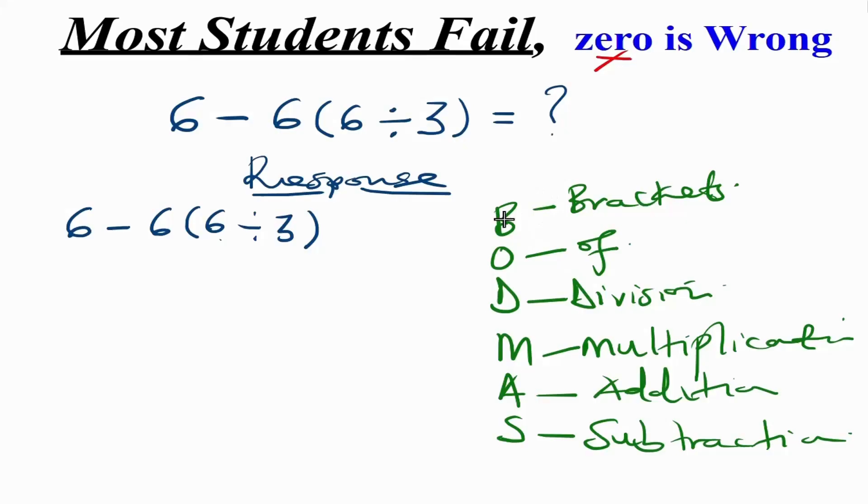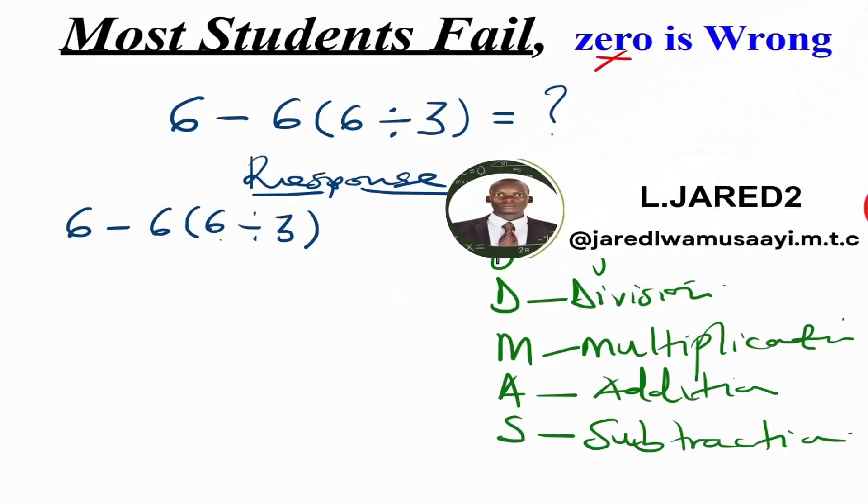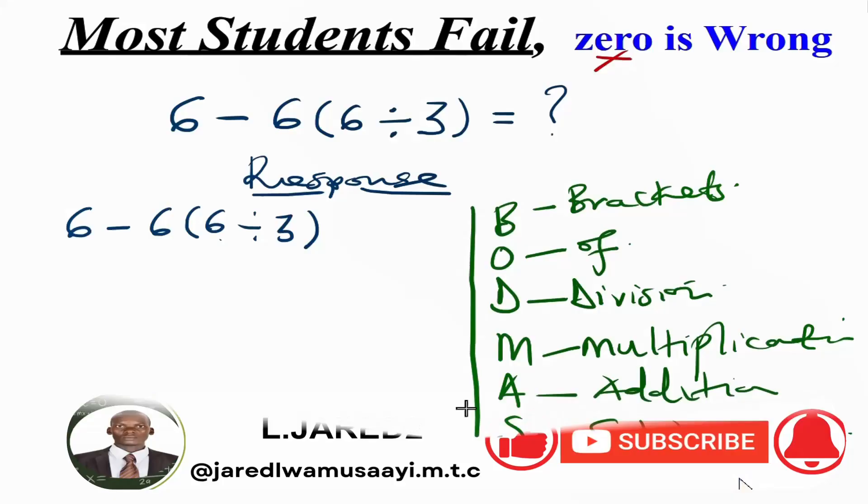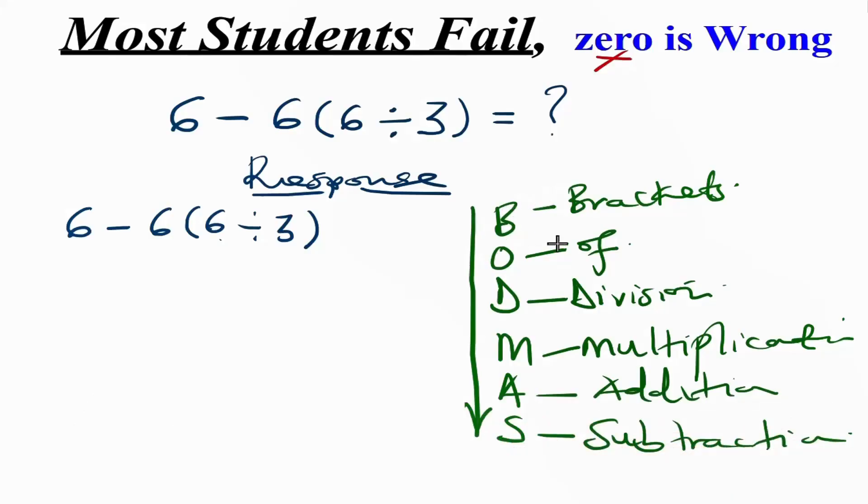So in here we follow BODMAS, whereby the B standing for brackets is given the first priority. It means that in case we have brackets in the expression, we first deal with the figures which are enclosed in the brackets, followed by of, then division in that order. Bracket first, of first, division, multiplication follows, addition follows, then lastly we least consider subtraction in the expression after dealing with all the other operations.